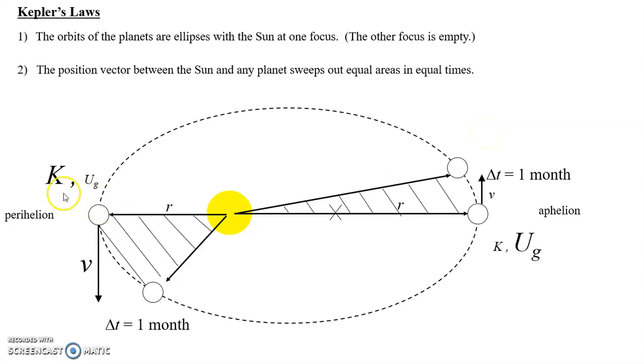Based on the diagram, we saw that one month here traversed a rather large distance, and one month here traversed a rather small distance. But if each one of those is one month, what's the consequence? Well, that means it must be going faster over here and slower over here,